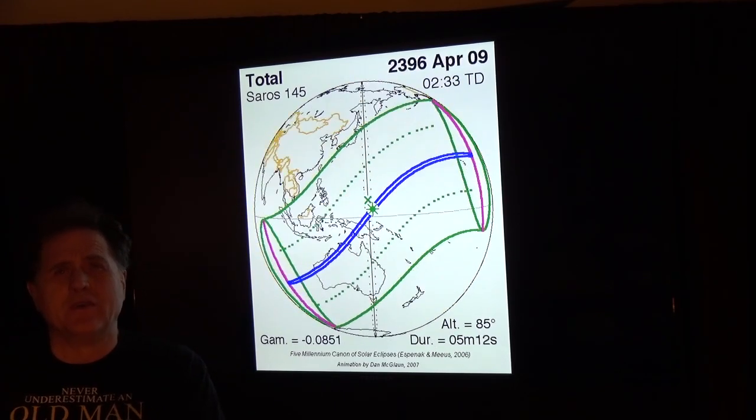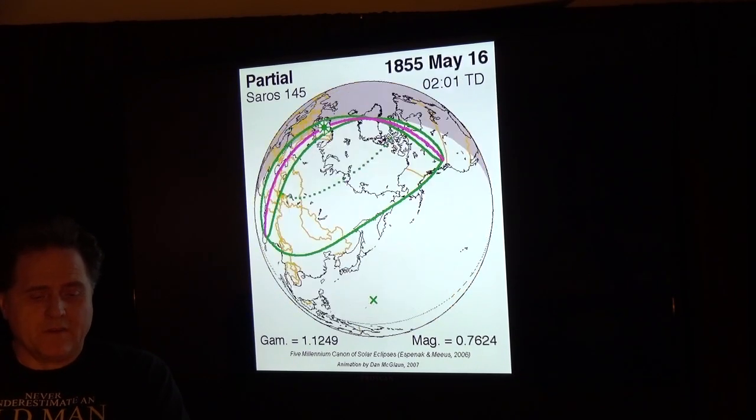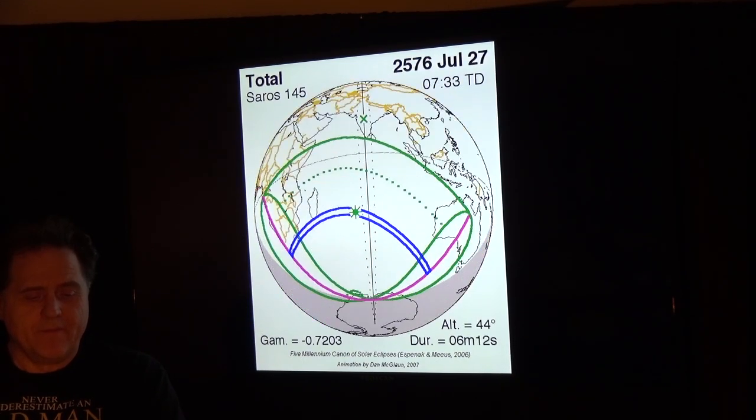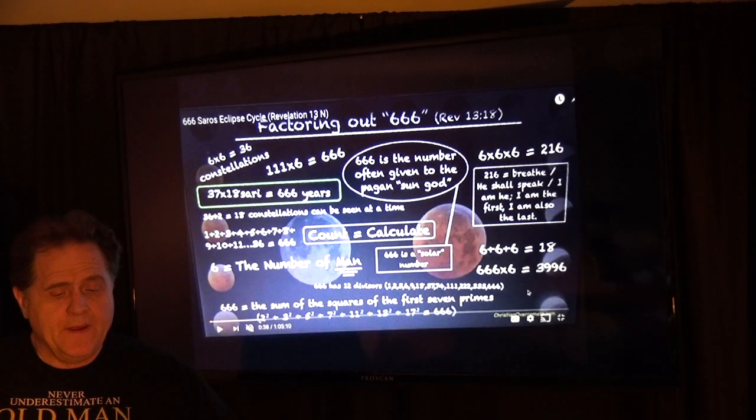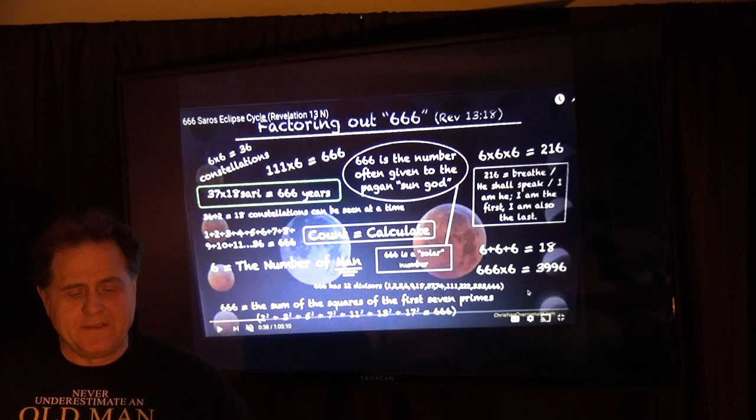There's a little gif showing you the double blue lines that more or less follow eclipses over the earth. Just a visual. And factoring out 666, Revelations 13:18. Six times six equals 36, those constellations. Six times 111, 666.